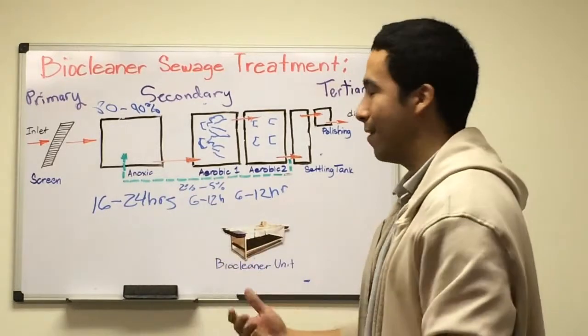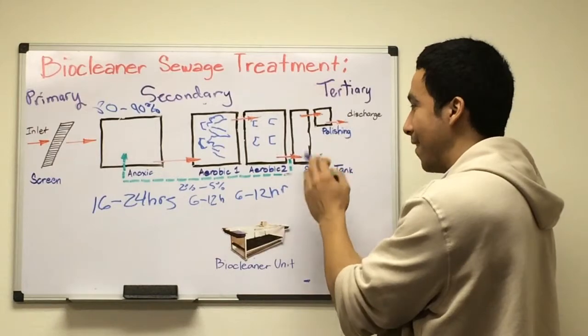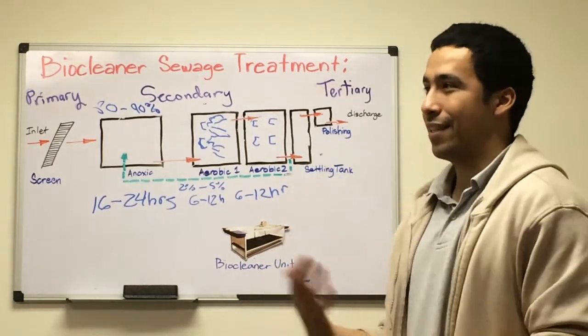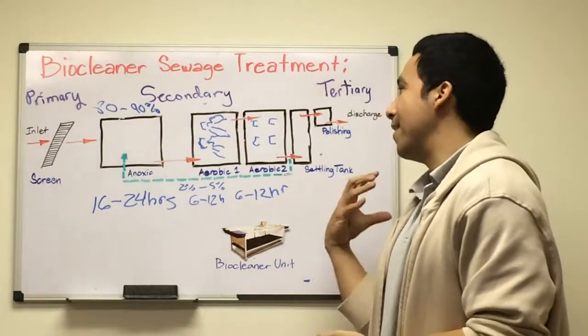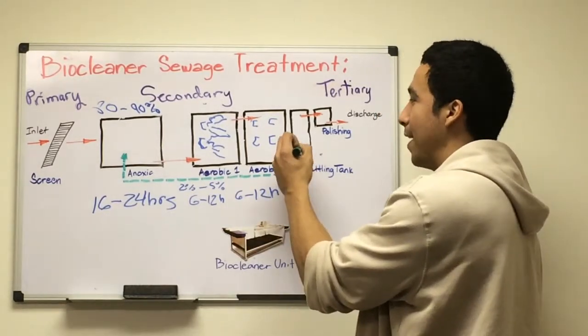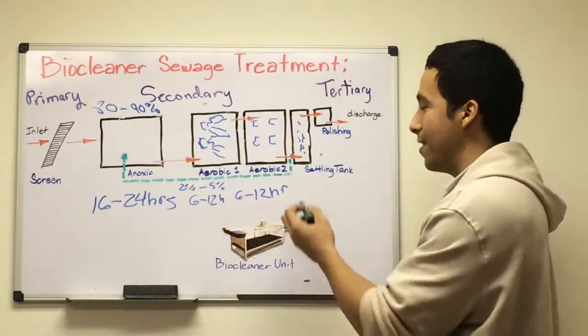After aerobic treatment, we have a settling tank. This is the final stage of our secondary process. The settling tank lets the finer solid sludge settle to the bottom, and eventually our microbes here will chew down the rest of the sludge. Usually our retention time for a settling tank is four to six hours, which is adequate.